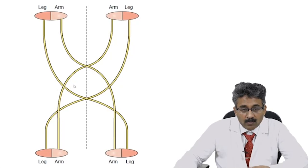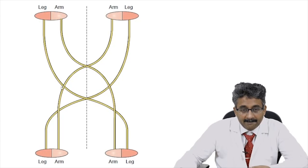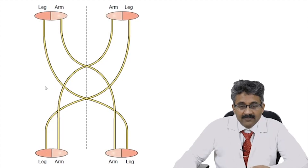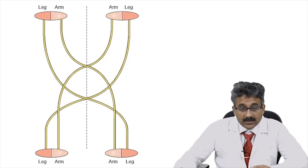This cruciate paralysis occurs in foramen magnum lesions, either due to compression or a demyelinating plaque such as in multiple sclerosis. This concludes the brief overview of the brainstem before discussing the examination of the cranial nerves.